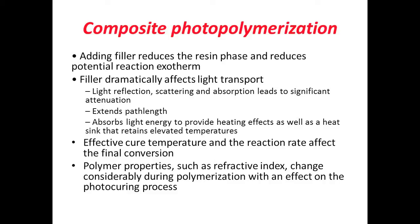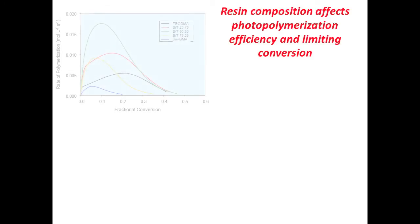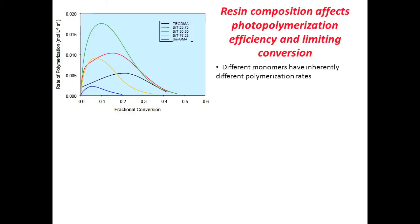To give just a few examples of effects of monomer chemistry on the photopolymerization process, here we have the rate of polymerization as a function of the degree of conversion. This is a little more elaborate than a standard conversion as a function of time, but that's the data we use to get this. The blue line at the bottom is a homopolymerization of bis-GMA. The black line a little above that is the homopolymerization of triethylene glycol dimethacrylate, a low viscosity monomer compared to the high viscosity bis-GMA.